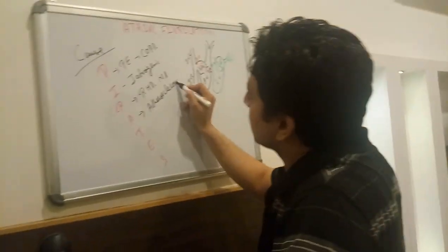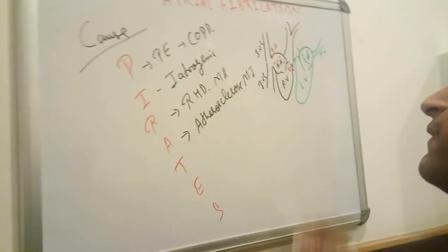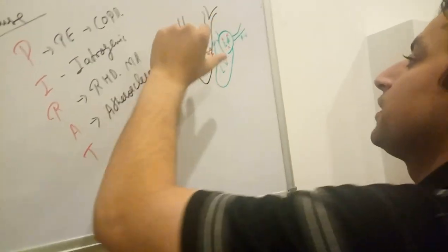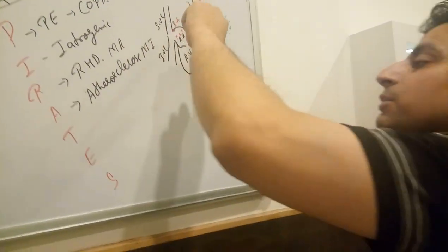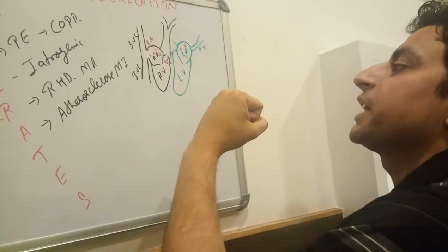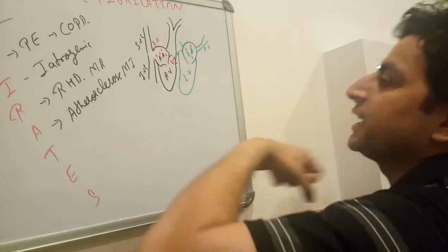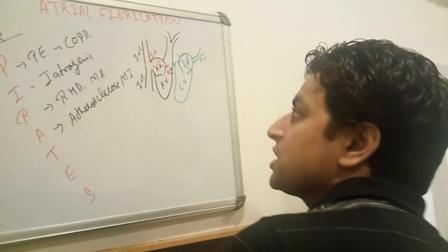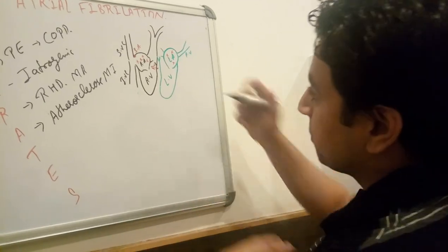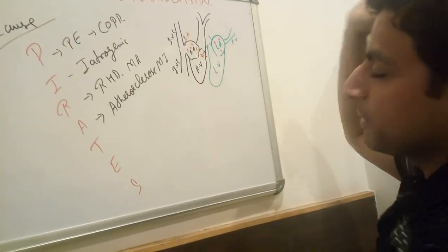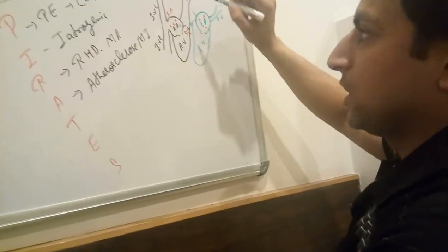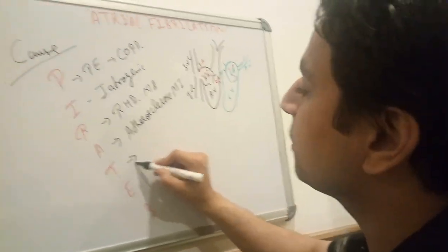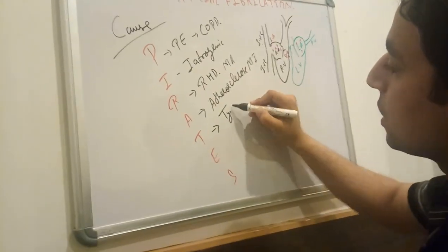In myocardial infarction, there can be blockage in the pulmonary trunk, causing pressure on the right ventricle and then the right atrium, leading to ectopic beats in atrial fibrillation in both atria. T-T represents thyrotoxicosis.